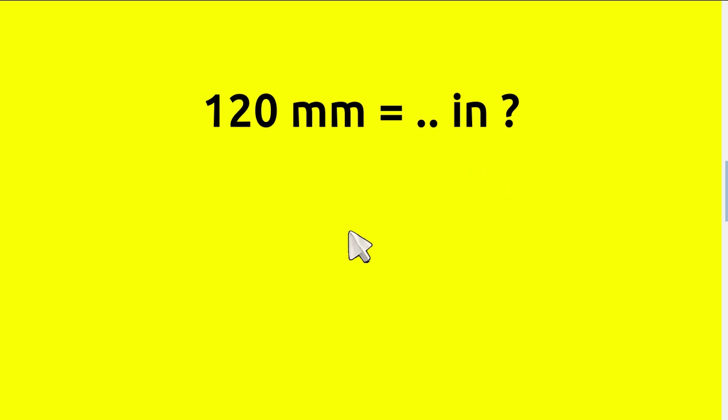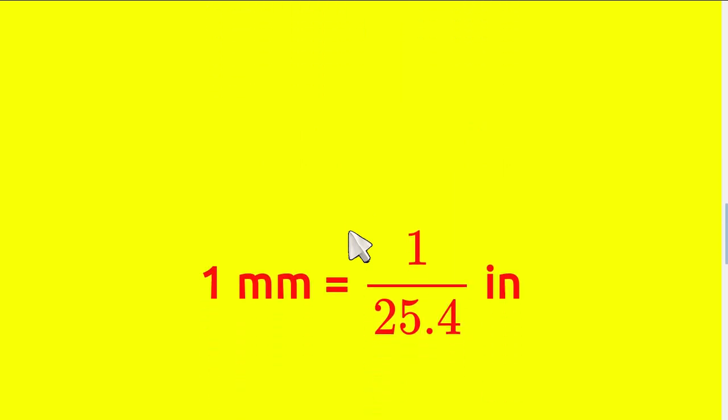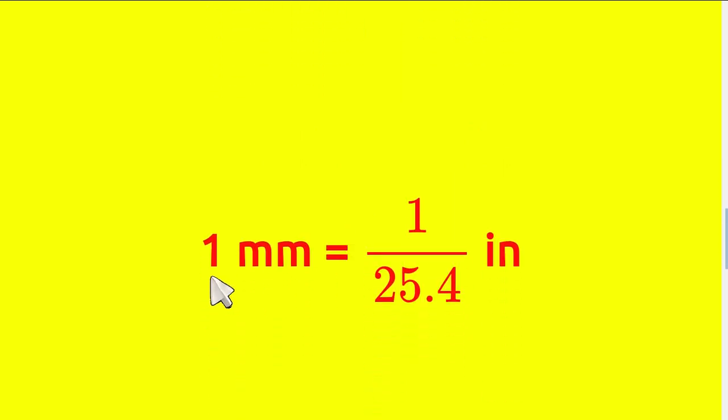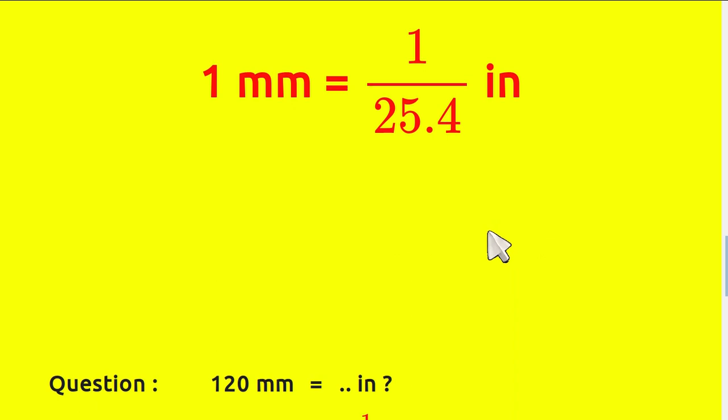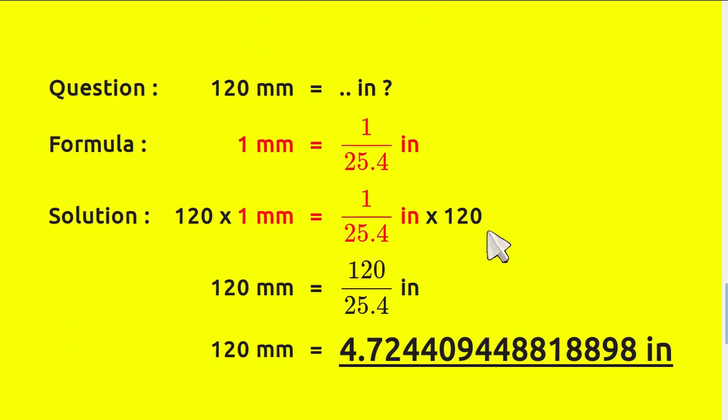Before we solve that problem, we need to know the formula first. One millimeter equals one over 25.4 inches. That's the formula, and this is the answer section.